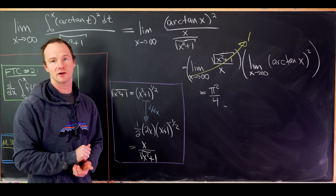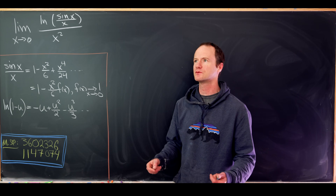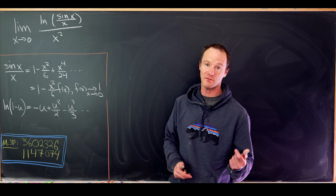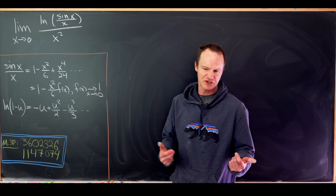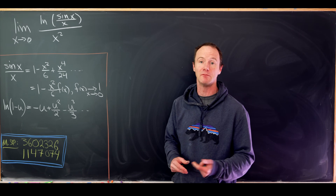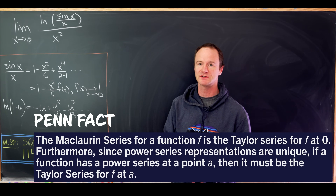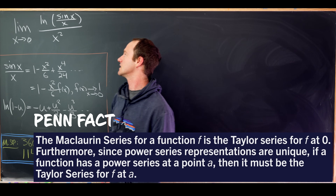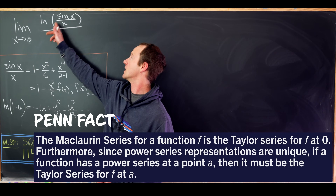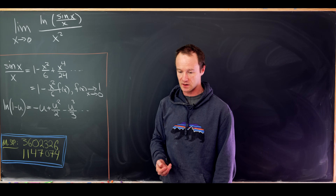Now let's look at our second limit. This will be another indeterminate form we could handle with L'Hôpital's rule, but instead we'll use Maclaurin series expansions for a bit of variety. We'll consider the limit as x goes to zero of the natural log of (sine of x over x), all over x squared.